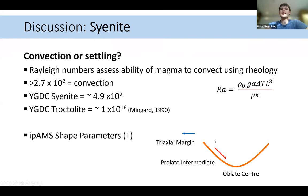Also quickly looking at the shape parameters. If we see this oblate center and triaxial margin, and then a prolate intermediate zone into the center of this syenite, this may represent the base of a convection cell where we have this prolate fabric, where the minerals are being more strongly aligned towards the center.